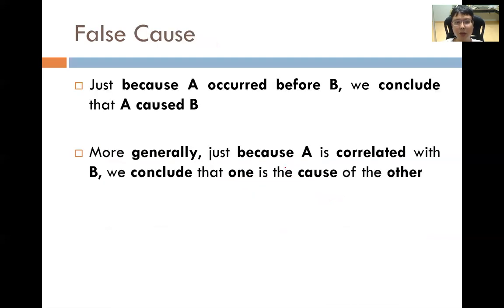False cause. Just because A occurred before B, we conclude that A caused B — this is obviously not a good argument. For example, the sun rose and then you went to buy breakfast — it is definitely not true that the sun rising caused you to buy breakfast; it is not a cause-and-effect thing. More generally, if A is correlated with B, we conclude that one is the cause of the other. Two things that are related does not necessarily mean one has to be the cause of the other.